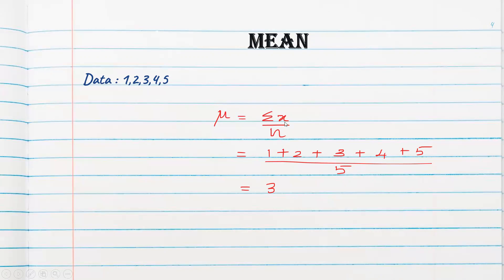Say there is data 1, 2, 3, 4, 5. I have to find out the mean of it. Mean is sum of observations divided by total number of observations. So: 1 + 2 + 3 + 4 + 5, divided by 5 observations. When you add everything: 3+3=6, 6+4=10, 10+5=15. 15 divided by 5 is equal to 3.